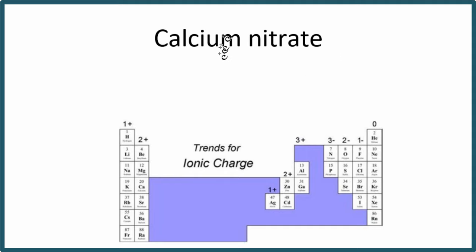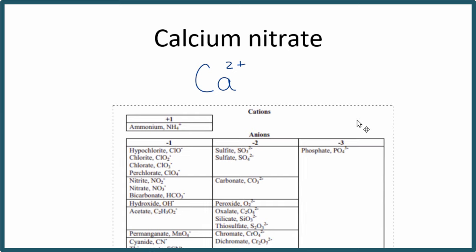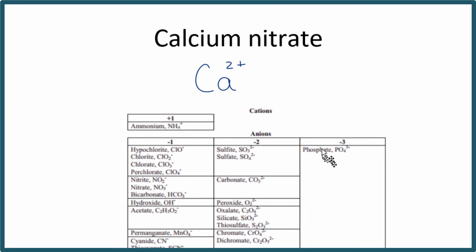So let's write what we know. We know we have calcium here, Ca. And we know that calcium is a 2-plus ionic charge. We can look the nitrate up on this table. Some teachers let you use it. Others want you to memorize it. But the nitrate right here, nitrate, is NO3-.